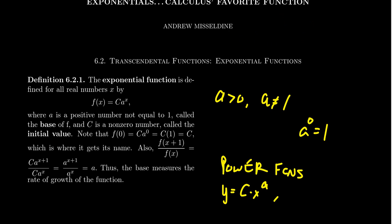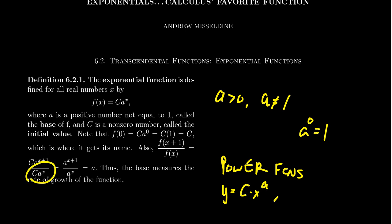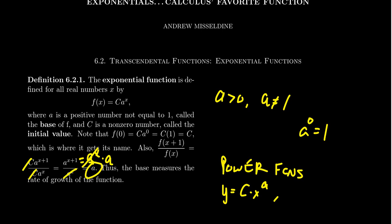Another important observation: if you compare the ratio of consecutive terms, f(x+1) divided by f(x), by the formula you get c times a to the x+1 over c times a to the x. The c's cancel, and by exponent rules you're left with just a. So the base gives us the rate of change — how quickly the function grows depends on a. A bigger base means faster growth; a smaller base means slower growth.